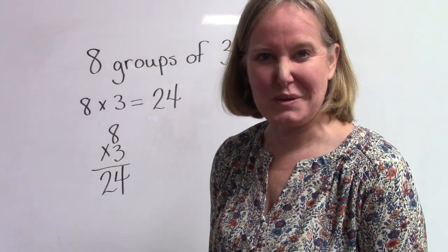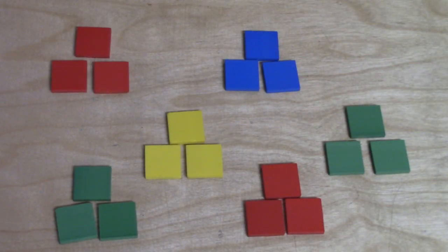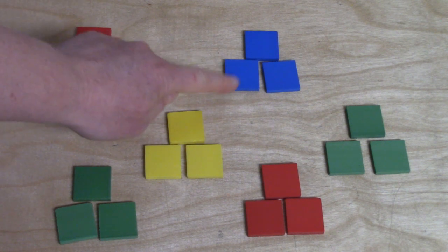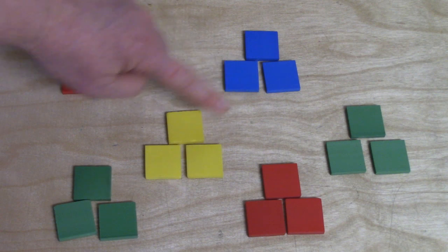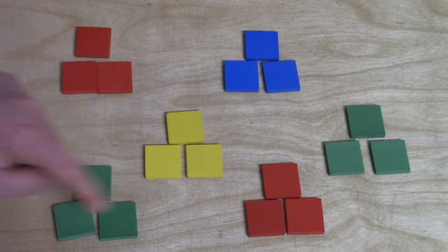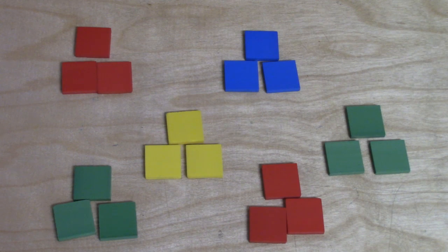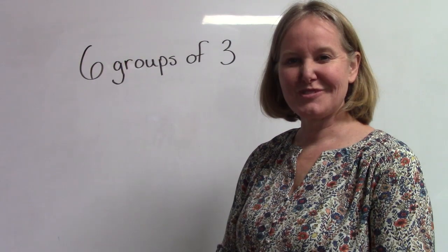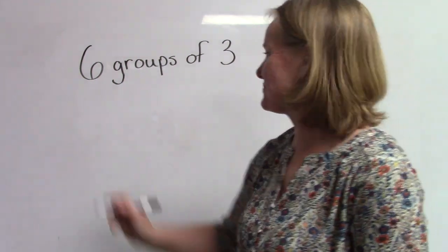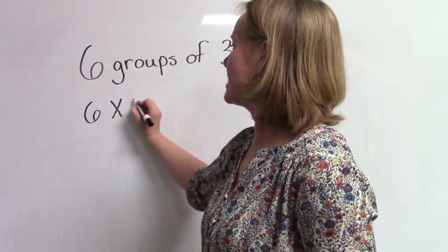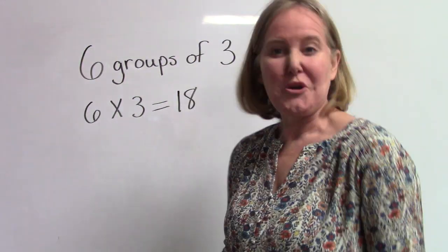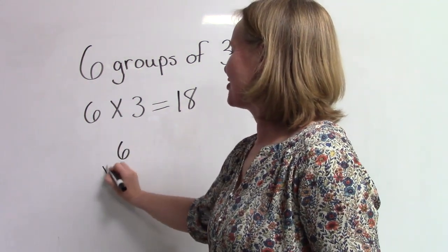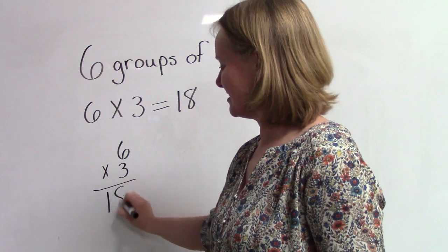Let's look at another question. Let's count how many groups of three we have: one, two, three, four, five, six. Six groups of three. Let's count our groups by three: three, six, nine, twelve, fifteen, eighteen. Six times three is eighteen. We just looked at six groups of three — six groups of three equals how many? You're right, it's eighteen. We could also write this: six groups of three equals eighteen.